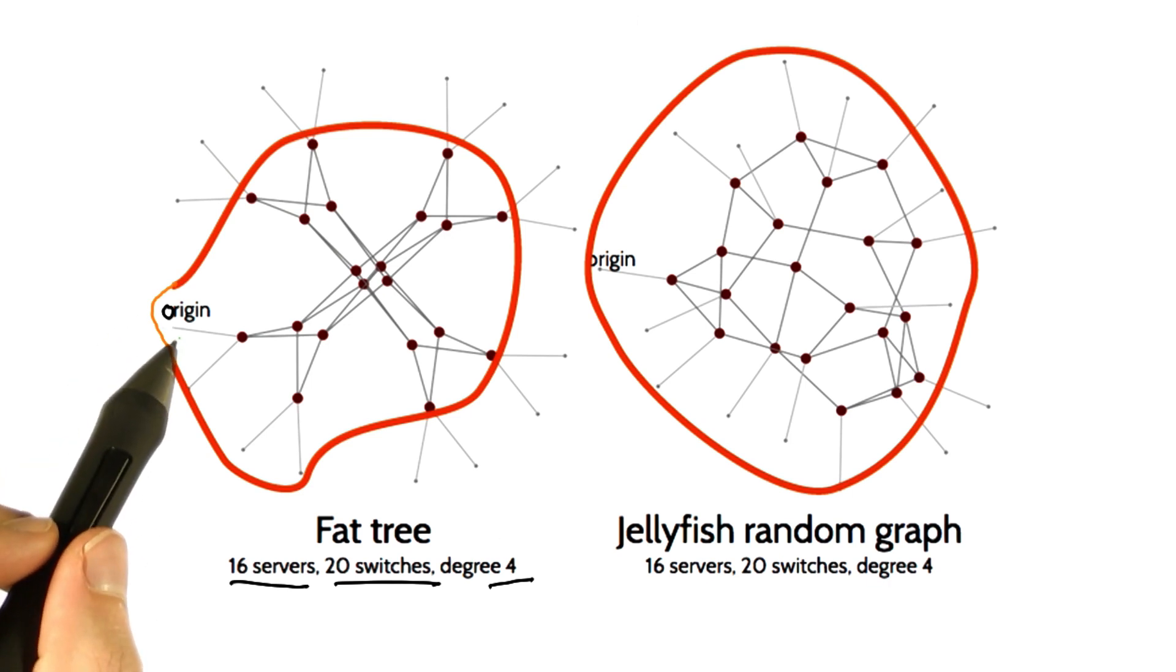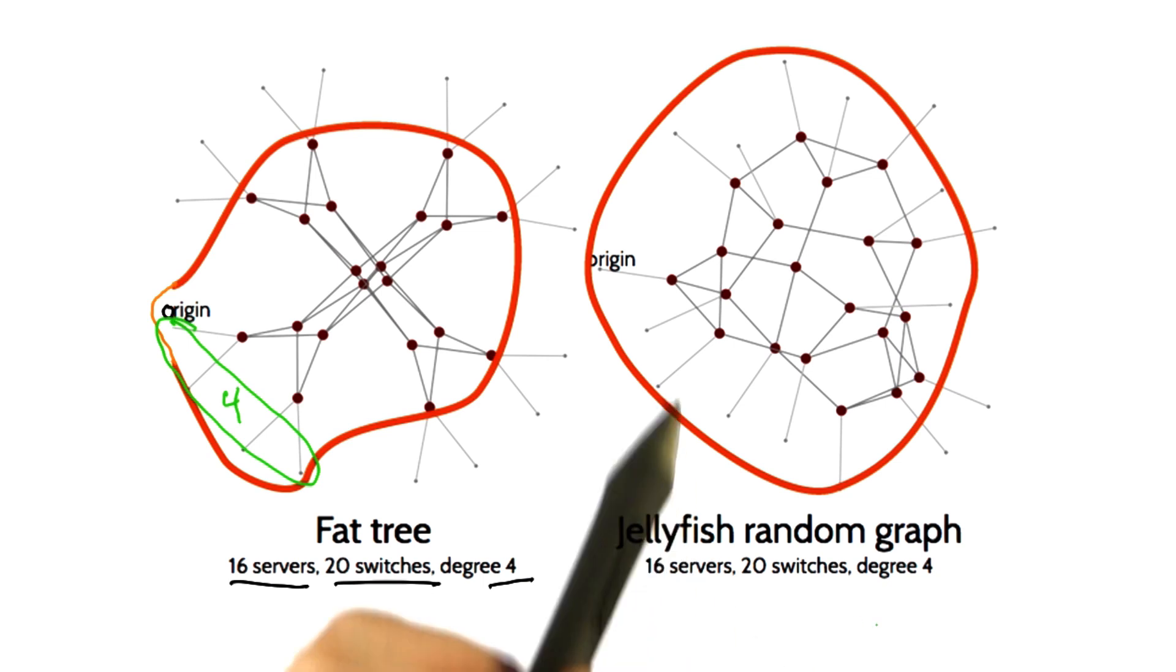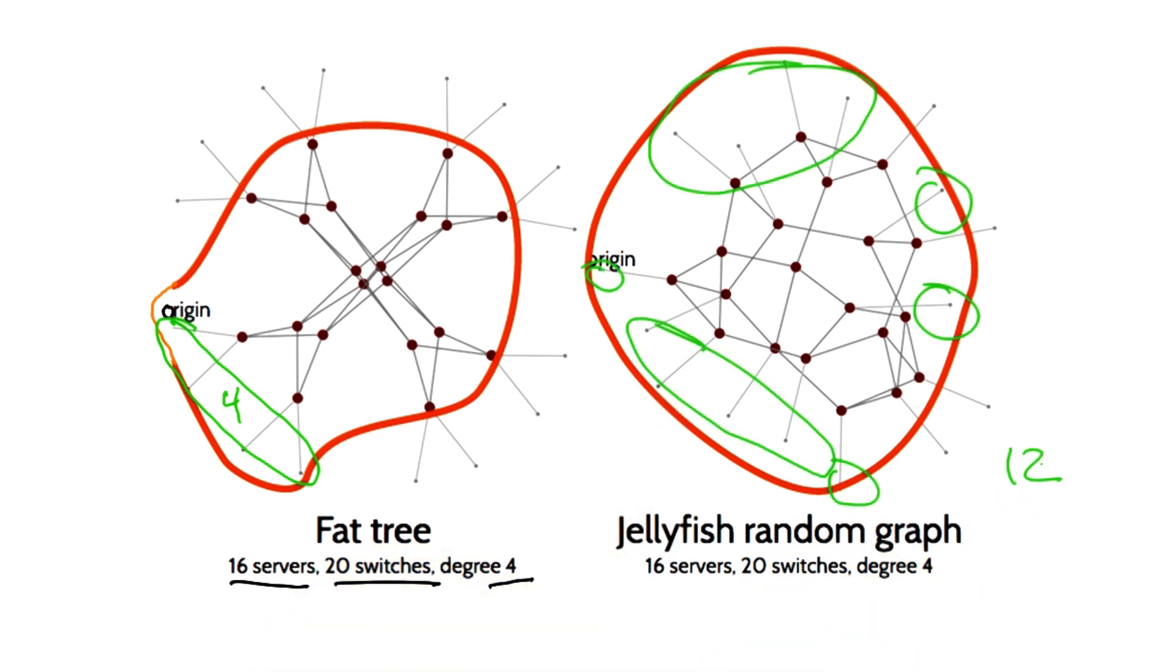In the fat tree topology, only 4 of 16 servers are reachable in less than 5 hops. In contrast, in the jellyfish random graph, there are 12 servers reachable. By making more servers reachable along shorter paths, jellyfish can increase capacity over a conventional fat tree topology.